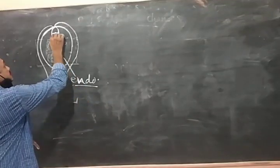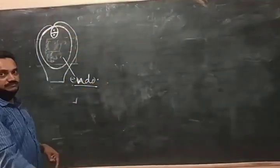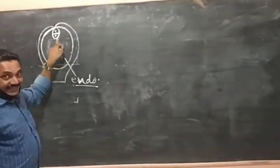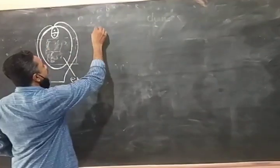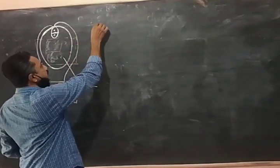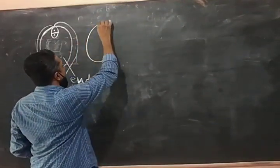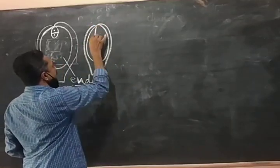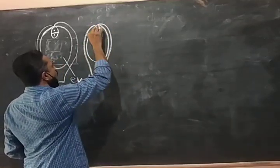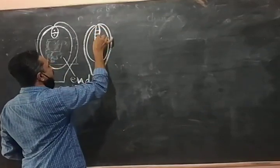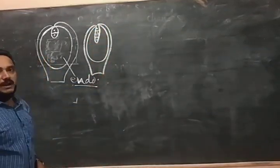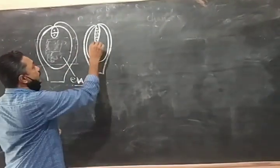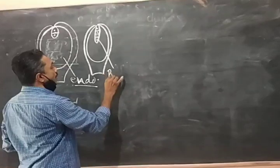The zygote divides by mitosis into a chain of cells. This chain of cells is called the proembryo. It divides two or three times by mitosis to form a chain of cells — this chain of cells is the proembryo.